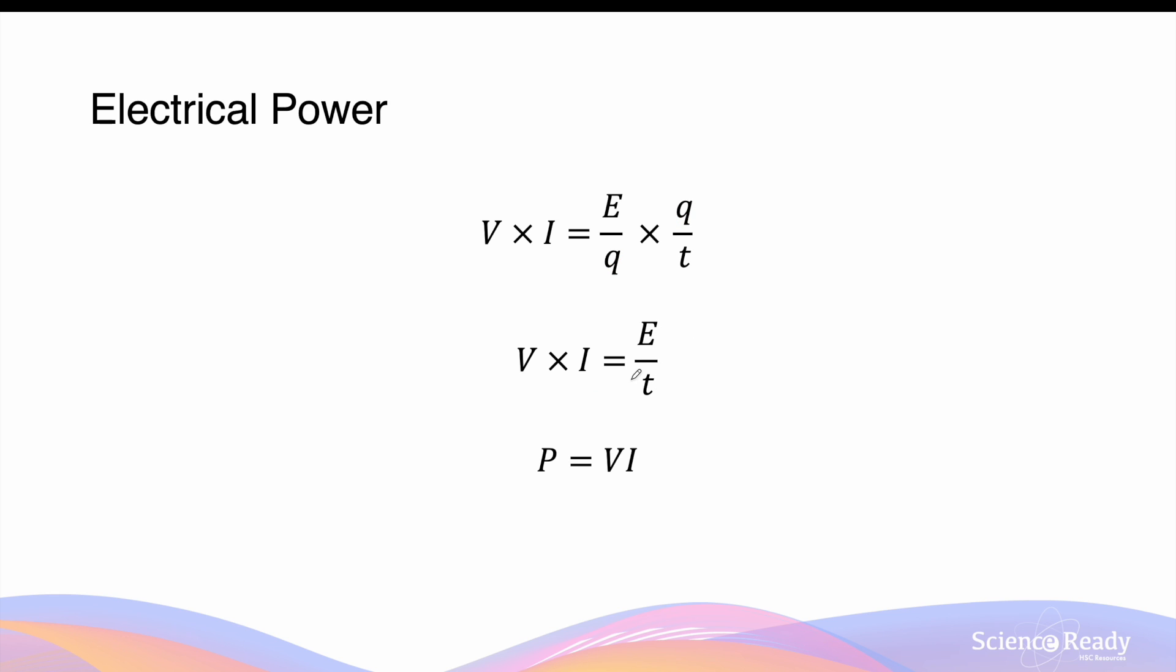Since we know energy over time is known as power, we can then say electrical power is equal to voltage multiplied by current. This is the new equation for power as provided in your formula sheets.